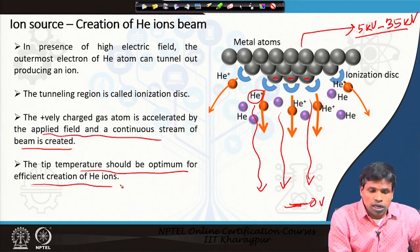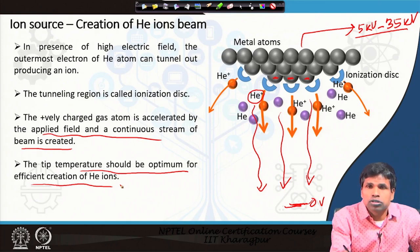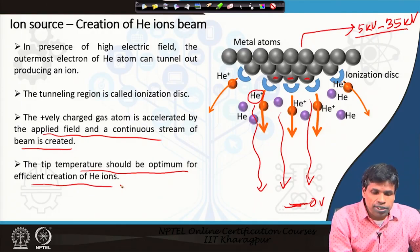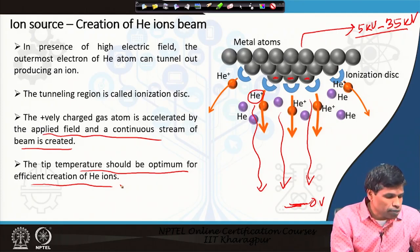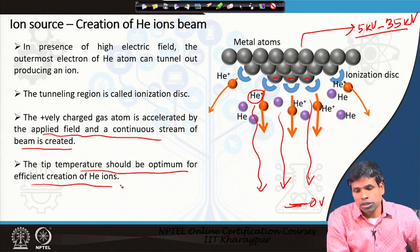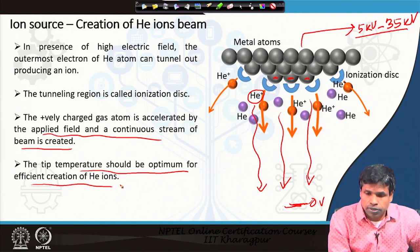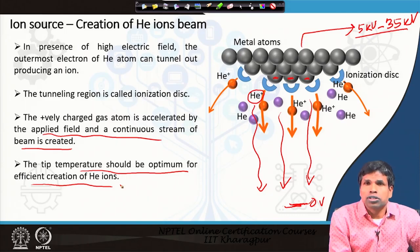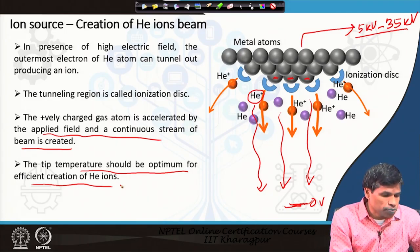If the tip temperature is very low, the helium atoms will become immobile and will not migrate. On the other hand, if the tip temperature is higher, the atoms will have much higher kinetic energy and would not come into contact with the tip atom in the appropriate ionization zone efficiently.